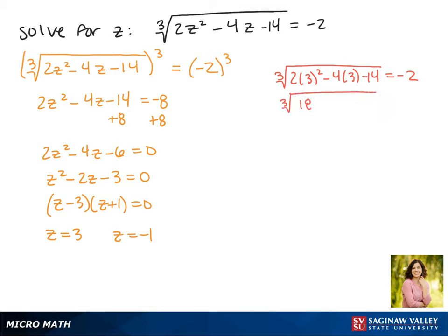Plugging 3 back in, we get the cube root of 18 minus 12 minus 14 equals negative 2. This gives us the cube root of negative 8 equals negative 2, and this is true, so 3 is a solution.